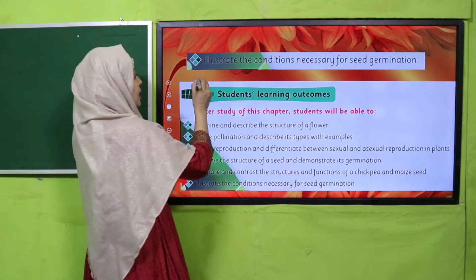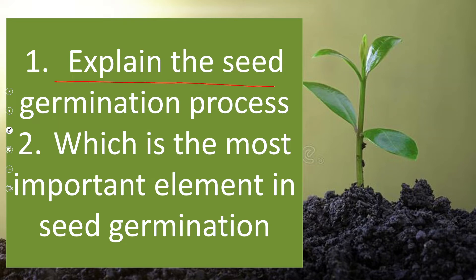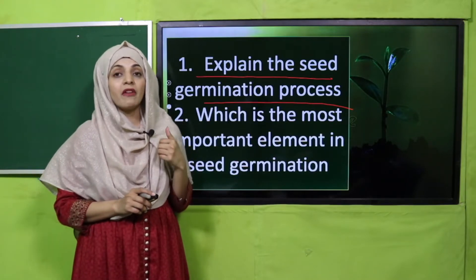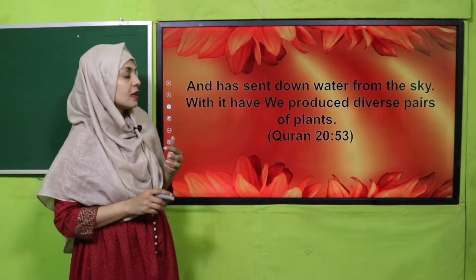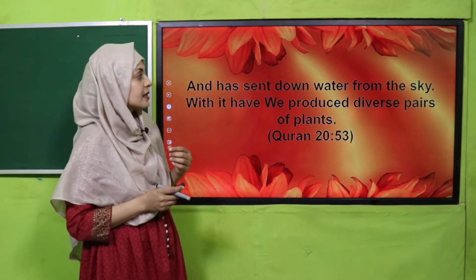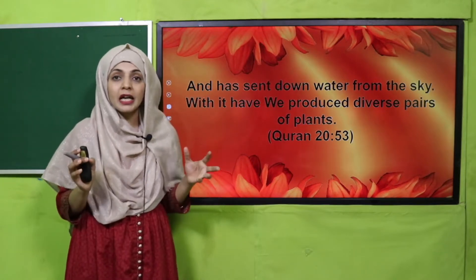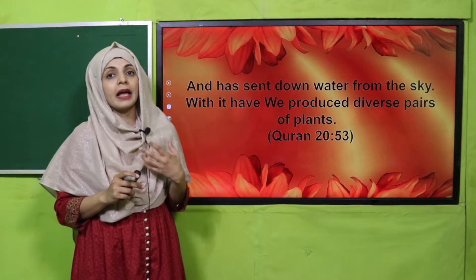In today's lecture, students will illustrate the conditions necessary for seed germination. Pre-reading question: explain the seed germination process. First, tiny roots come out, and then a tiny shoot comes out of the soil. The most important element is proper environmental conditions. From an Islamic perspective, Allah has sent down water from the sky, with which diverse pairs of plants are produced. When the important conditions reach a seed, it germinates and turns into a plant.